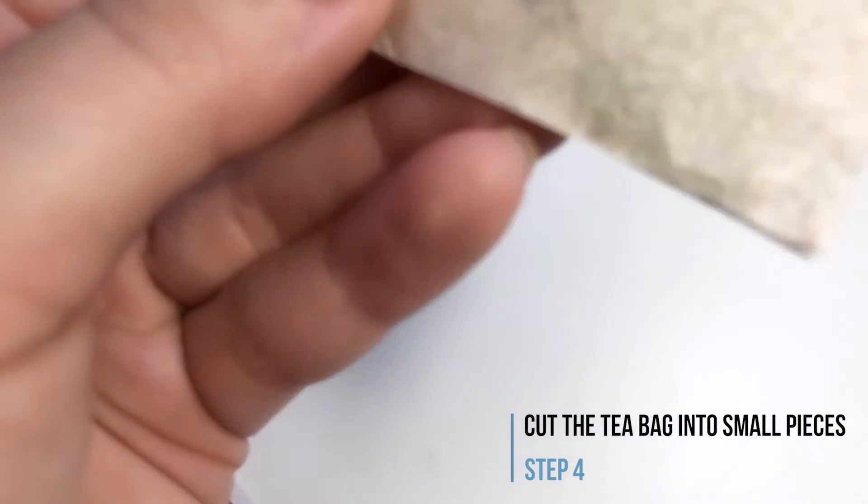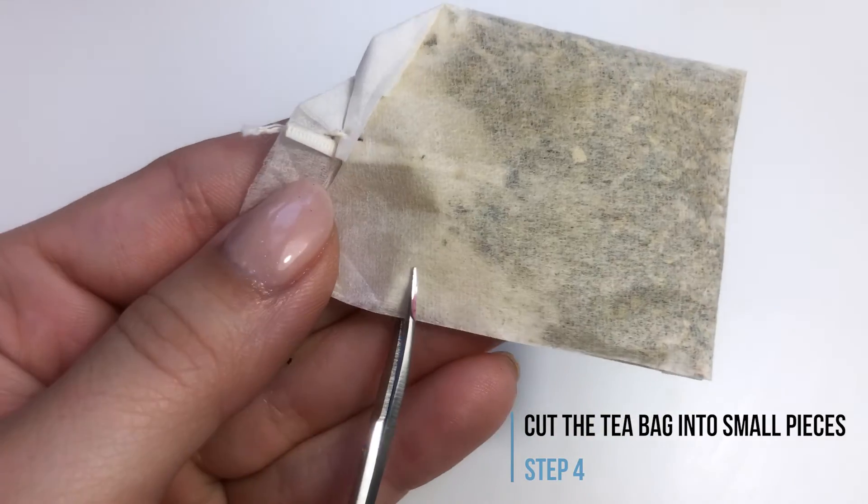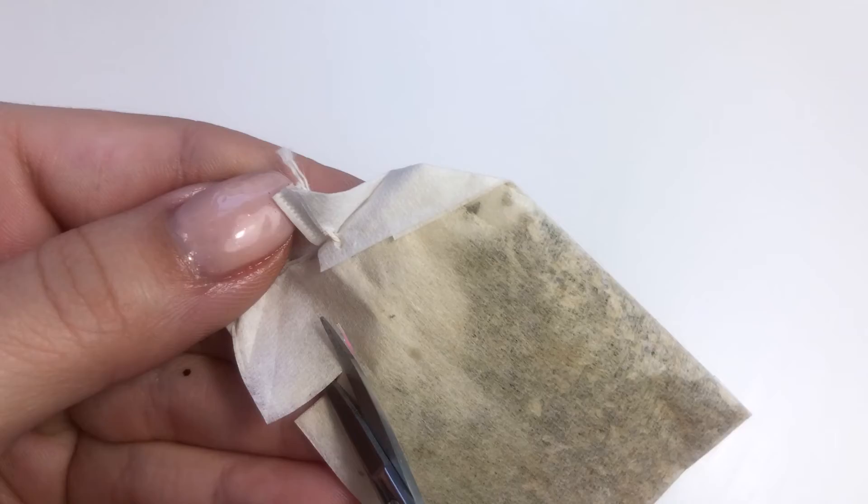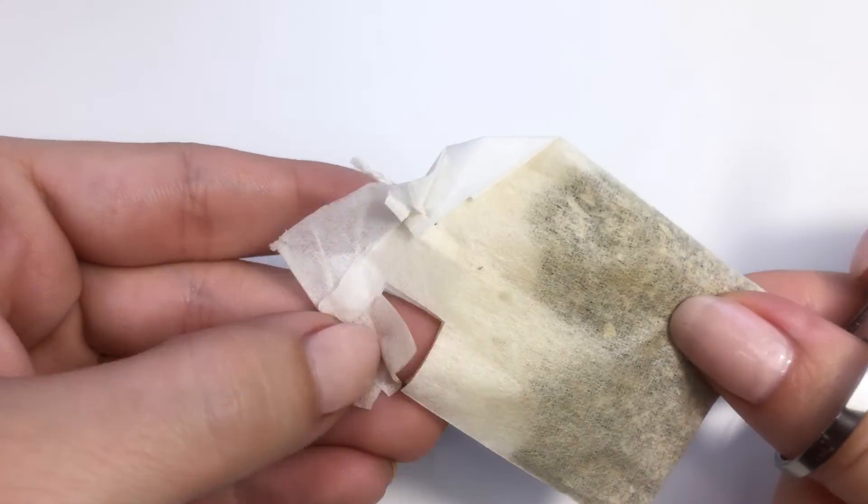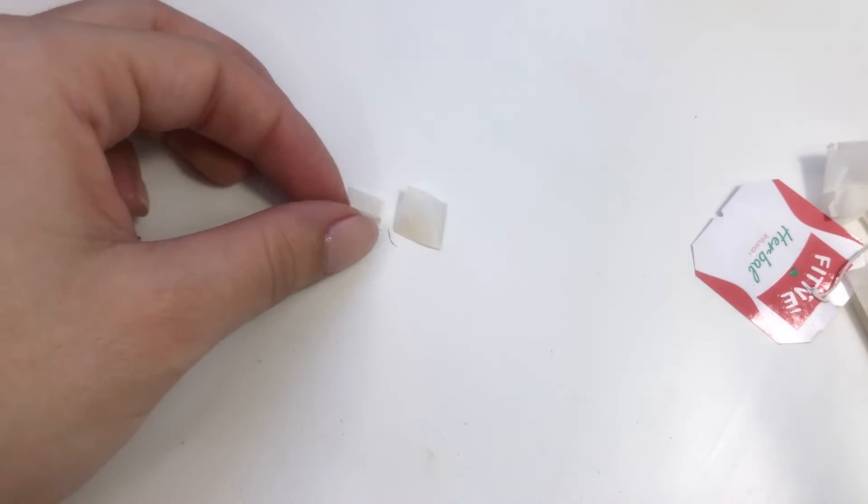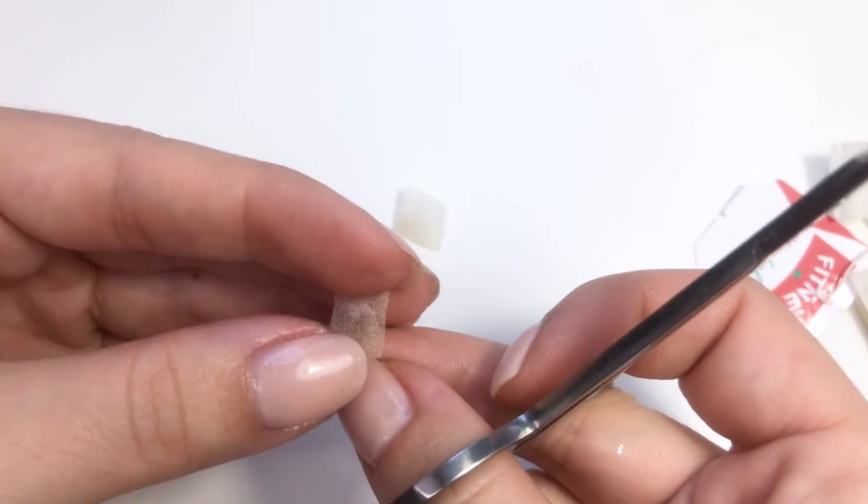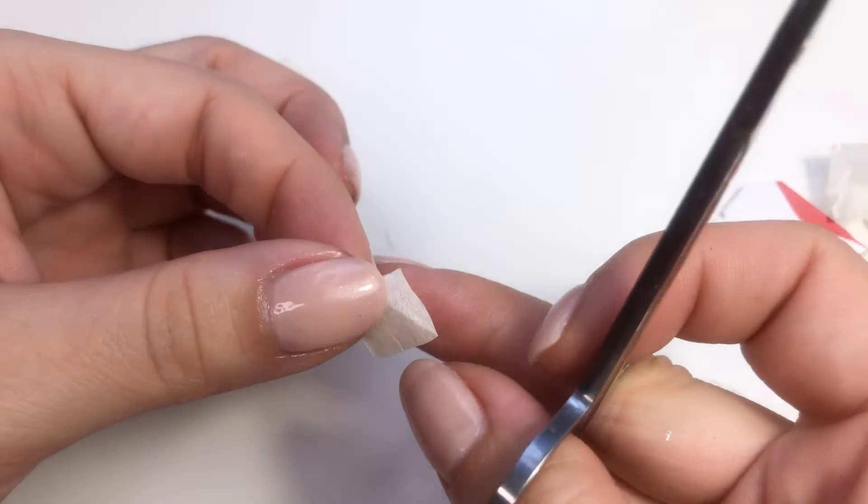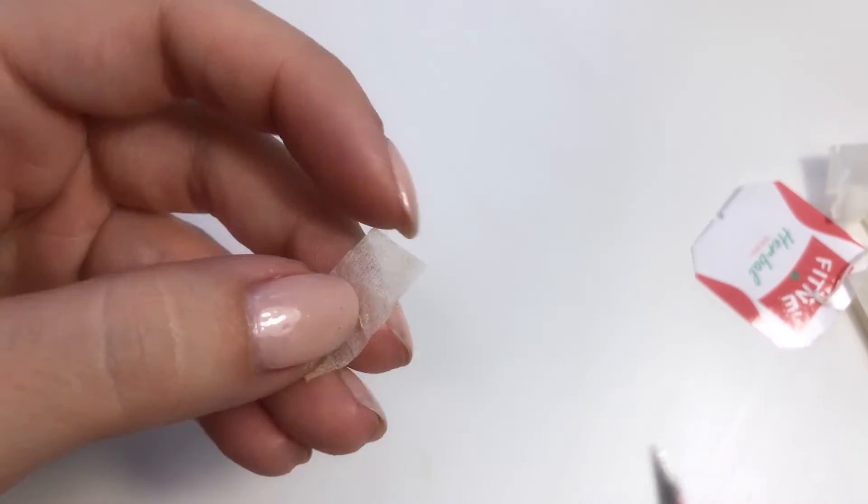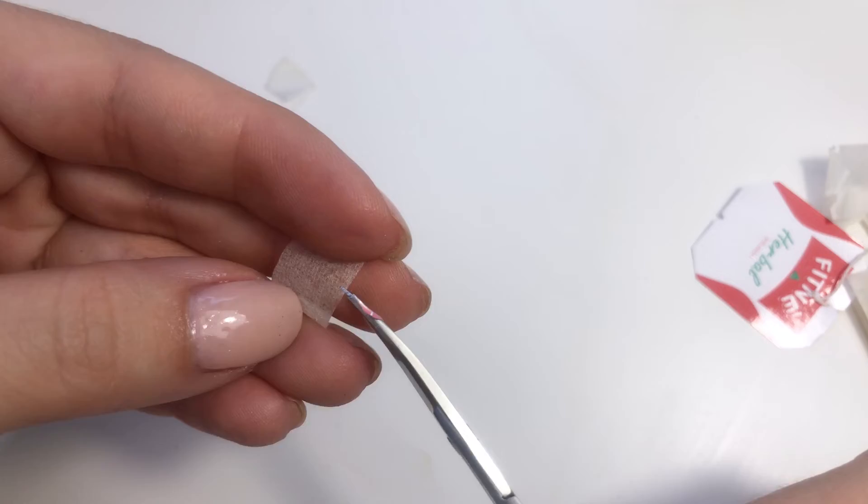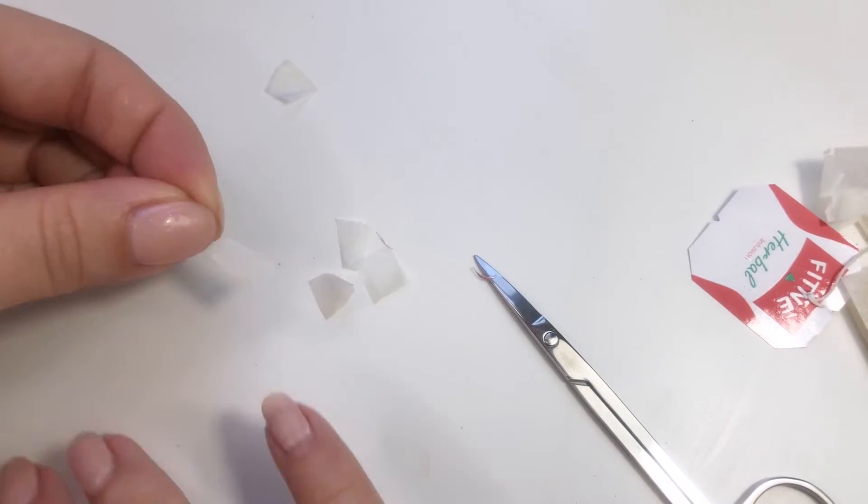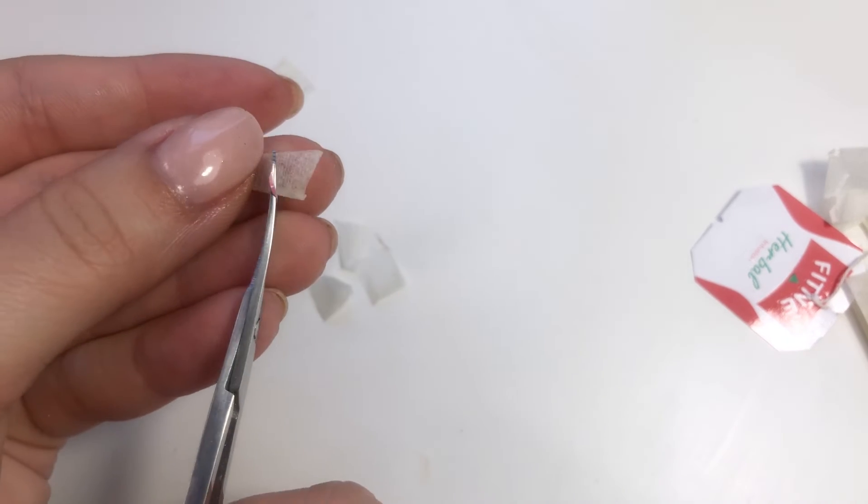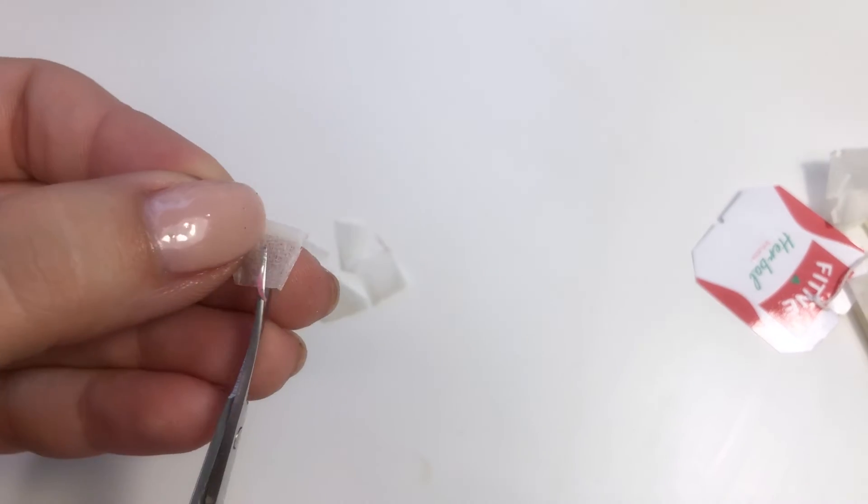Take your teabag and cut it into small pieces. At first we want to cut a square that is big enough for a whole nail. One or two parts of it you're gonna cut them in even smaller pieces. The smaller pieces are easier to play around with and stick to the nail.